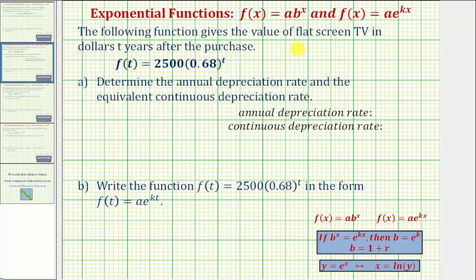The following function gives the value of a flat screen TV in dollars t years after the purchase. We're given f of t equals 2,500 times 0.68 raised to the power of t.